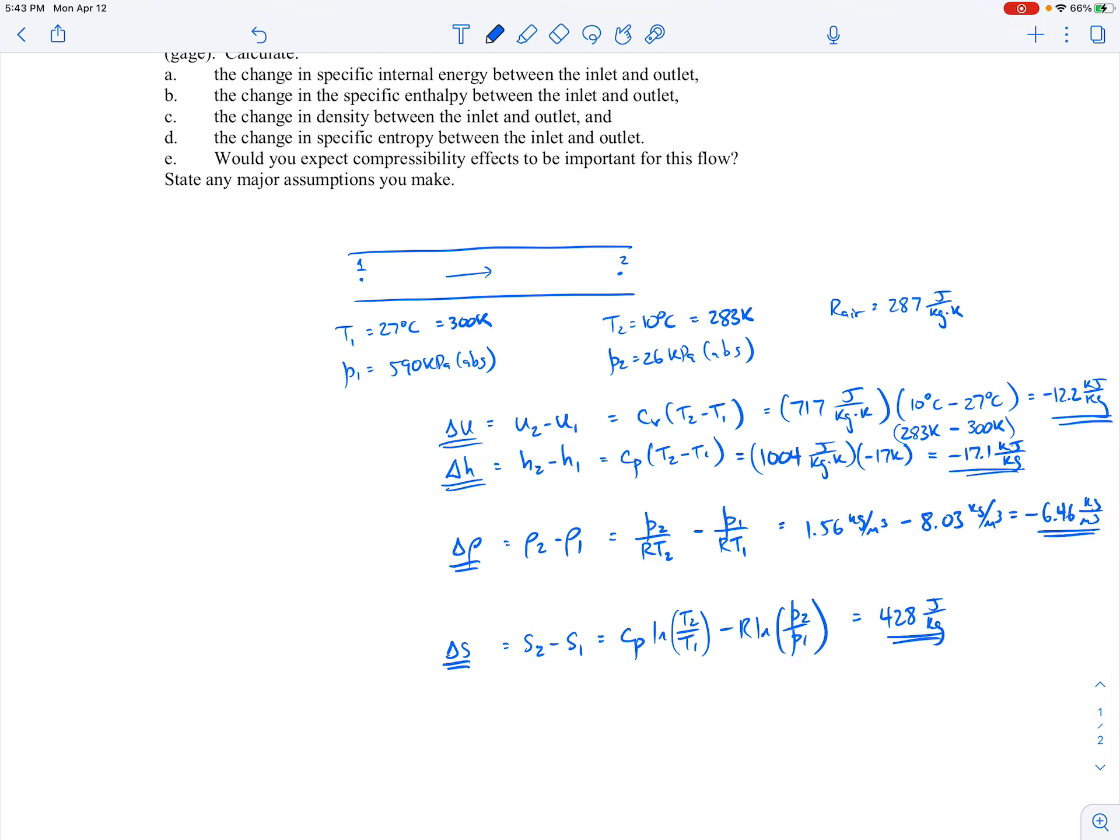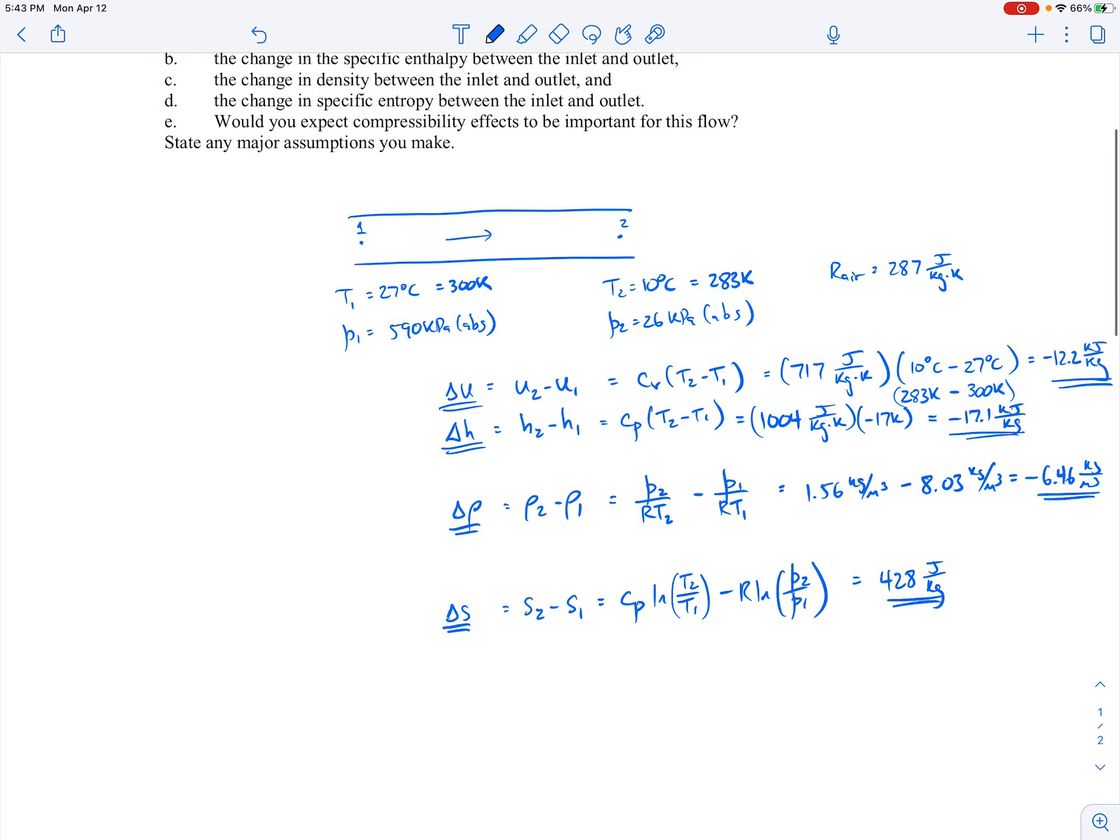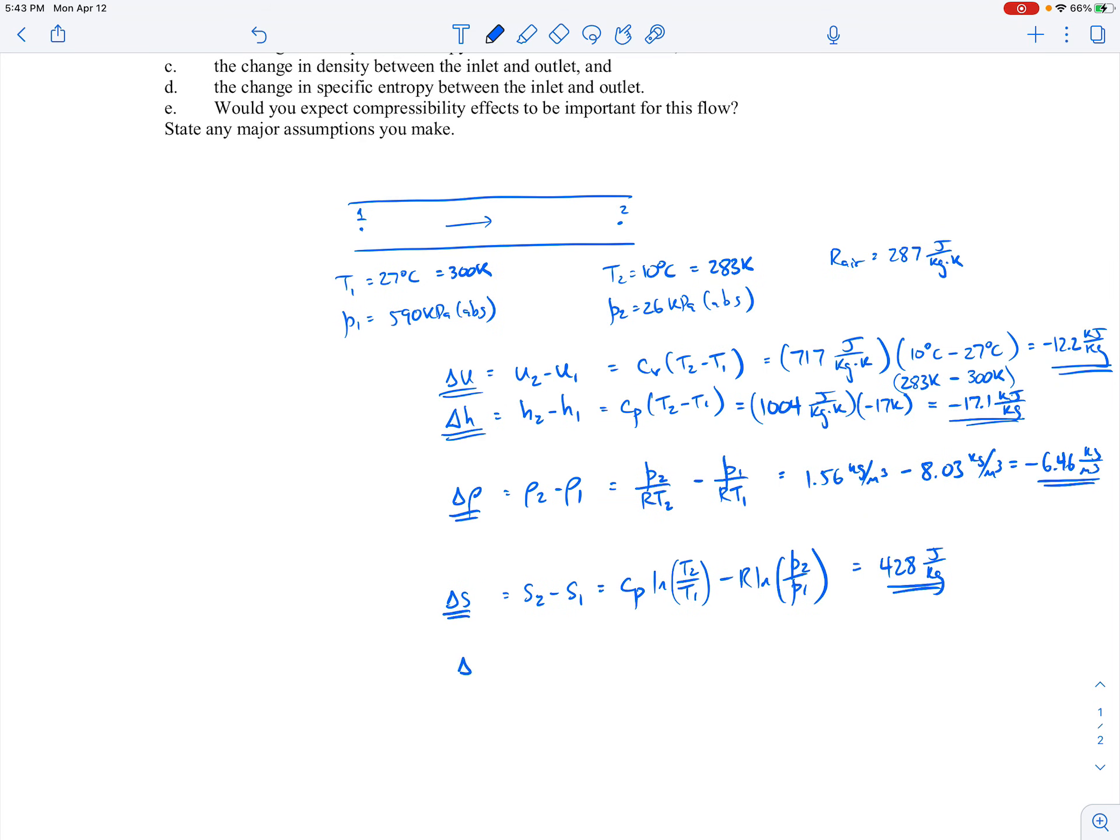So that gives us parts A through D. Now part E asks, would you expect compressibility effects to be important for this flow? So to figure that out, we'll just take a look at how that density changes. So remember, if it's incompressible, then you wouldn't expect a large change in the density. If it's compressible, then the density would change significantly. We do certainly see a change in the density.